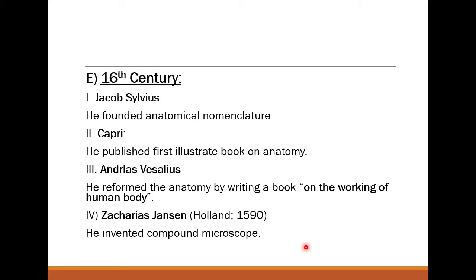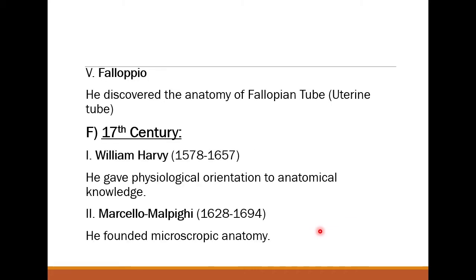Carpus published the first illustrated book on anatomy, showing different body structures. Andreas Vesalius reformed anatomy by writing a book on the working of the human body. Zacharias Janssen of Holland invented the compound microscope in 1590 — from this point, histology became possible. Falloppio discovered the anatomy of the Fallopian tube, which was named after him.